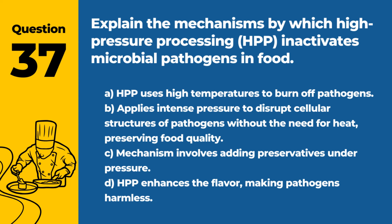Question 37. Explain the mechanisms by which high-pressure processing (HPP) inactivates microbial pathogens in food. a. HPP uses high temperatures to burn off pathogens. b. Applies intense pressure to disrupt cellular structures of pathogens without the need for heat, preserving food quality. c. Mechanism involves adding preservatives under pressure. d. HPP enhances the flavor, making pathogens harmless. Answer: b. Applies intense pressure to disrupt cellular structures of pathogens without the need for heat, preserving food quality. HPP is an effective non-thermal pasteurization technique.